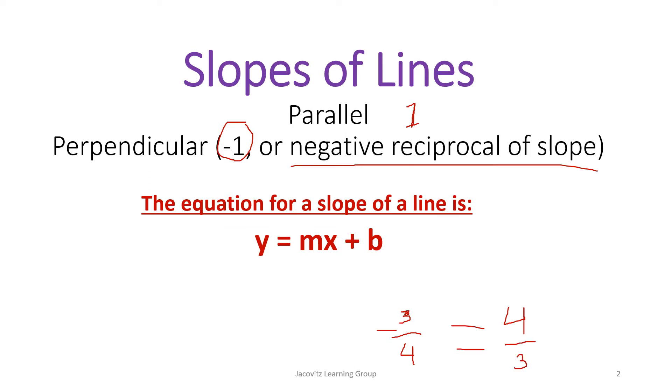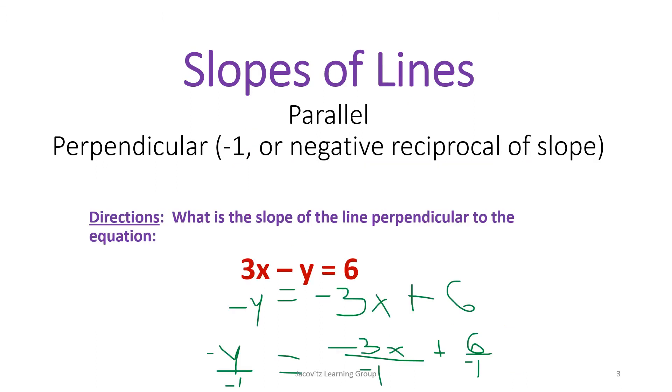Here are your directions. It says what is the slope of the line perpendicular to the equation? Remember, perpendicular is going to be the negative reciprocal of a slope. First things first, slope intercept is written as y = mx + b.